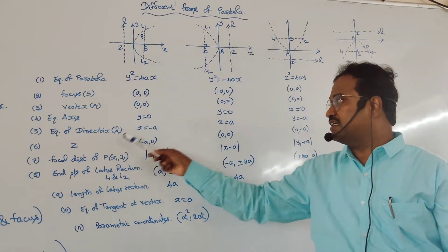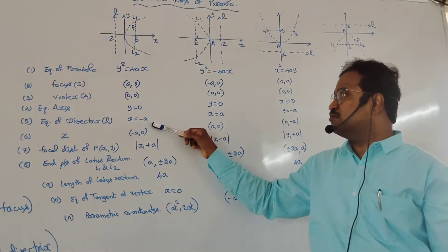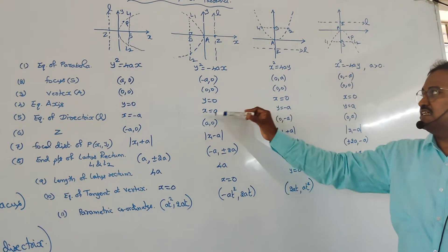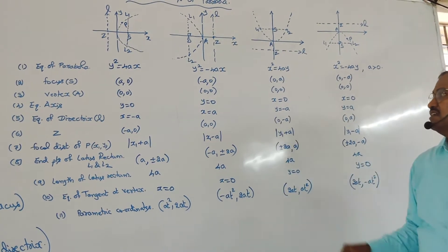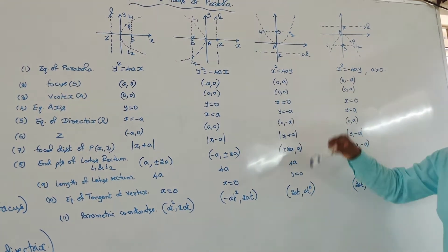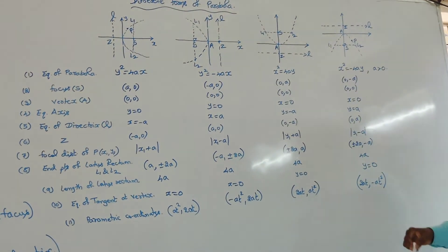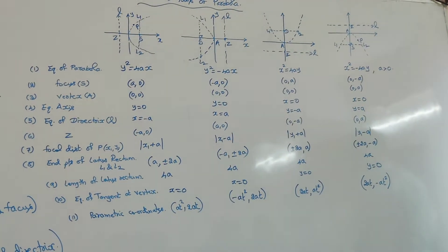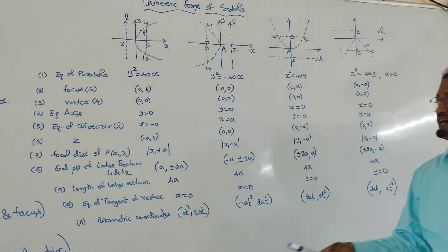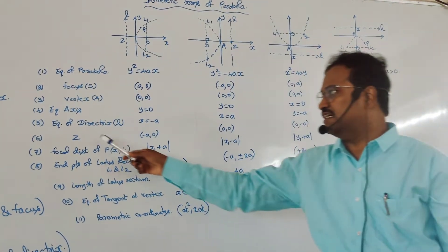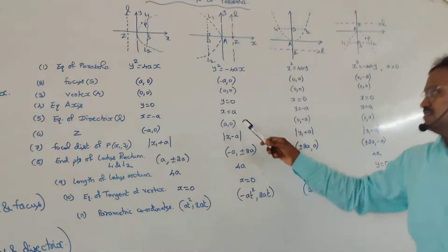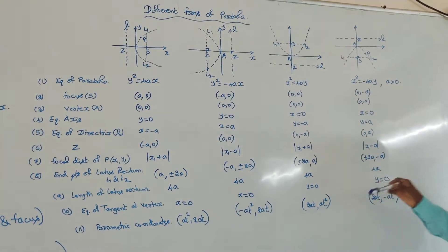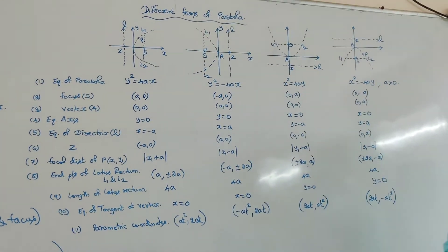The equation of the directrix: for the first case, x = −A; for the second case, x = A; for the third case, y = −A; for the fourth case, y = A. The coordinates of Z (foot of directrix): (−A, 0), (A, 0), (0, −A), and (0, A) respectively.